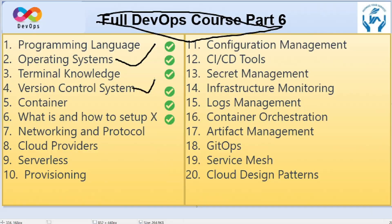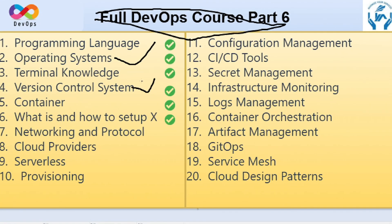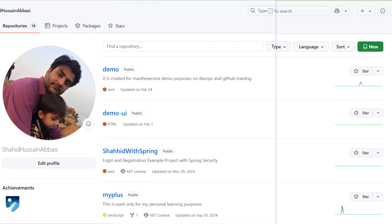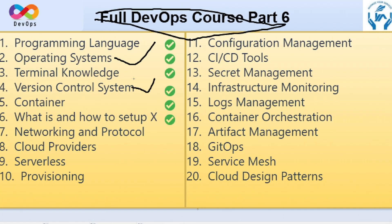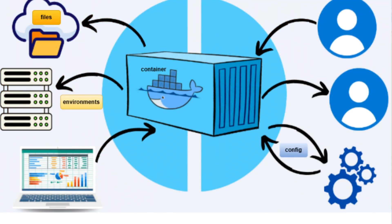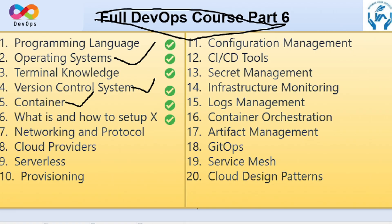GitHub is the most commonly used version control system, where we have all our repositories and projects. You can clone, pull, push, do your own practice, raise concerns, ask for improvements, or whatever you require there. For container management, I went with Docker at the moment, and later on we will be working with Kubernetes and more.